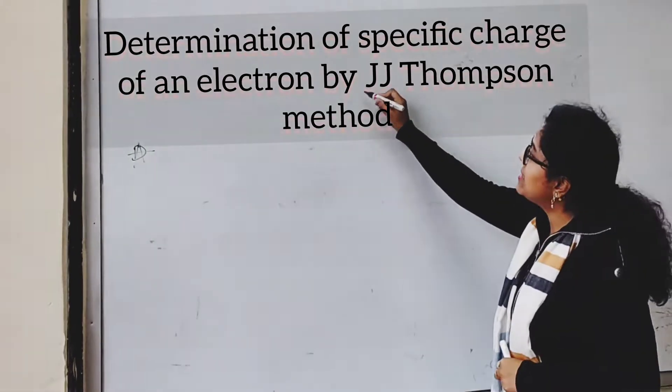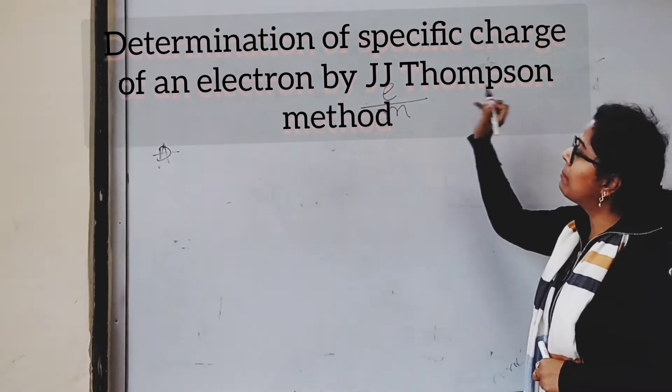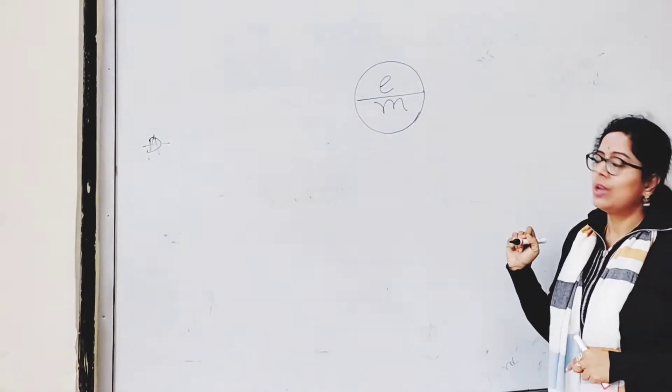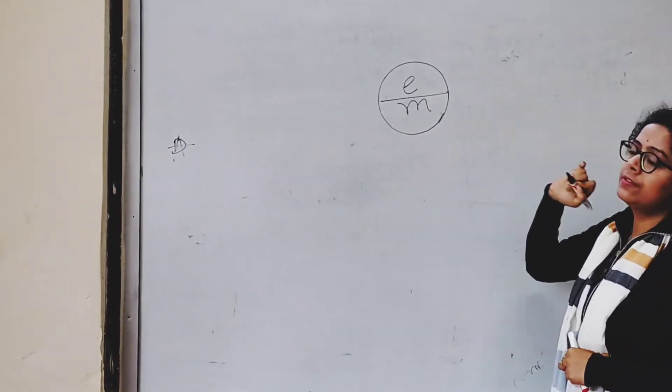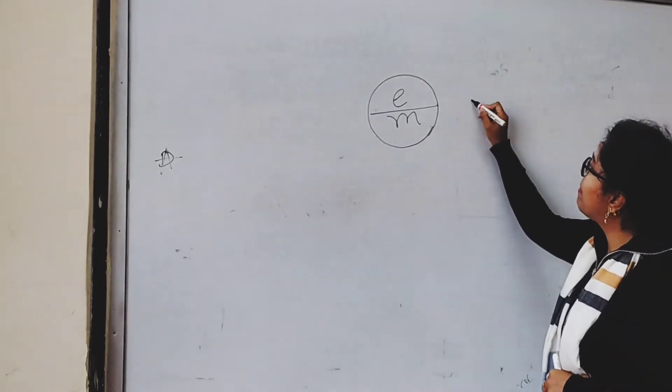What is specific charge? Specific charge is charge of electron by mass of electron. That means charge by mass ratio. So the unit of the specific charge will be coulomb per kg.